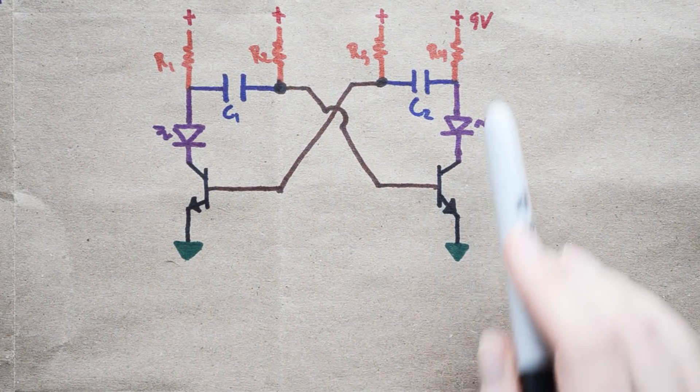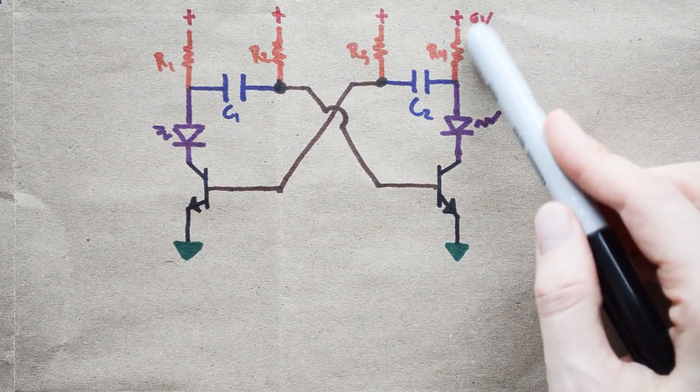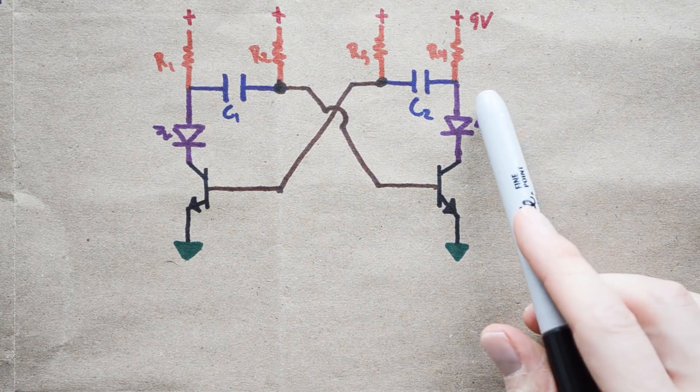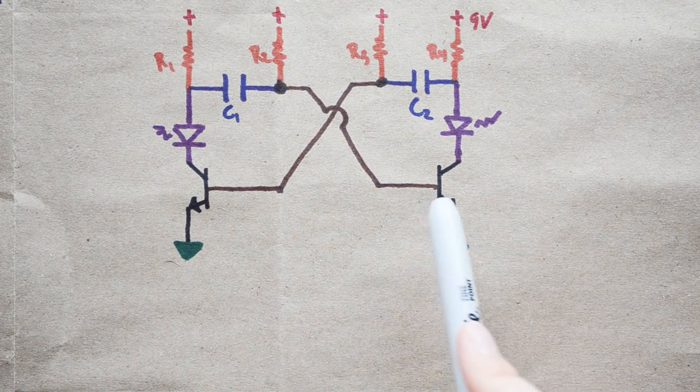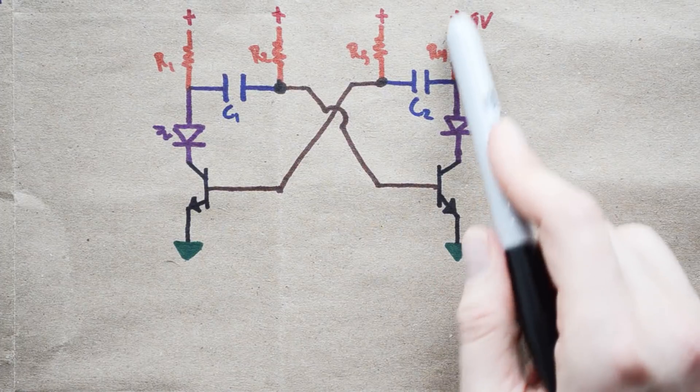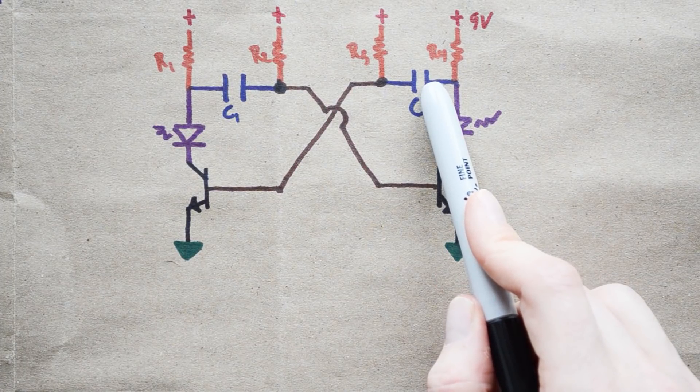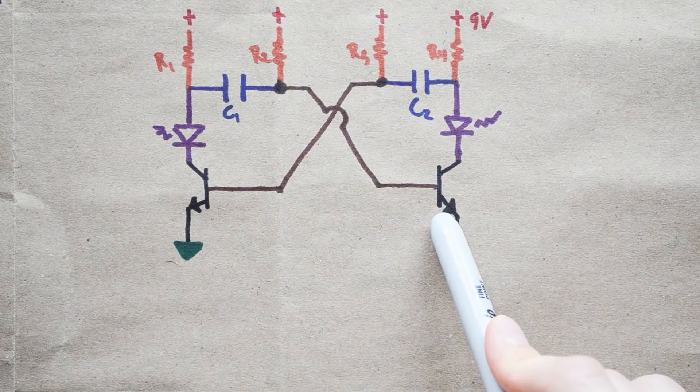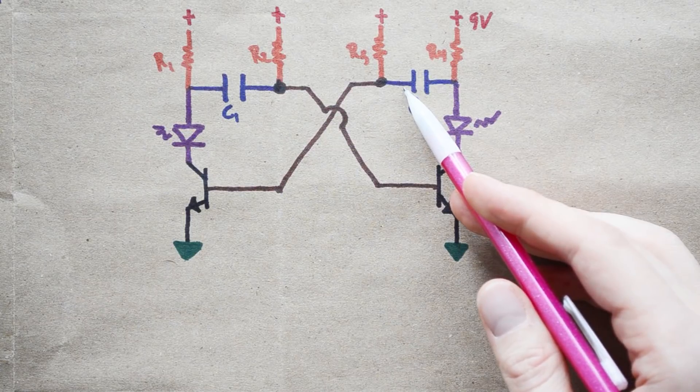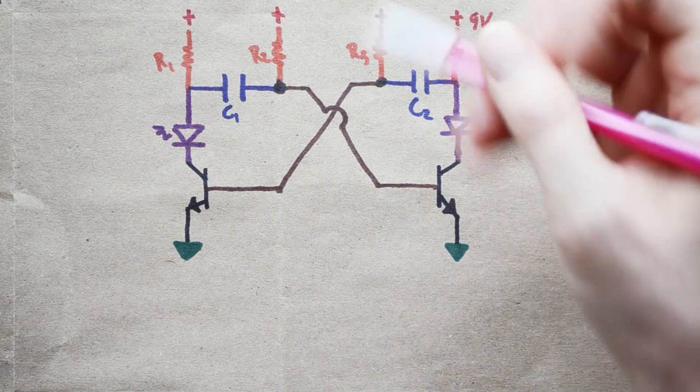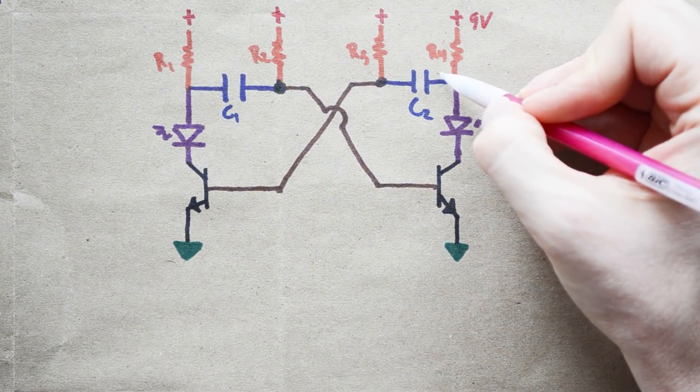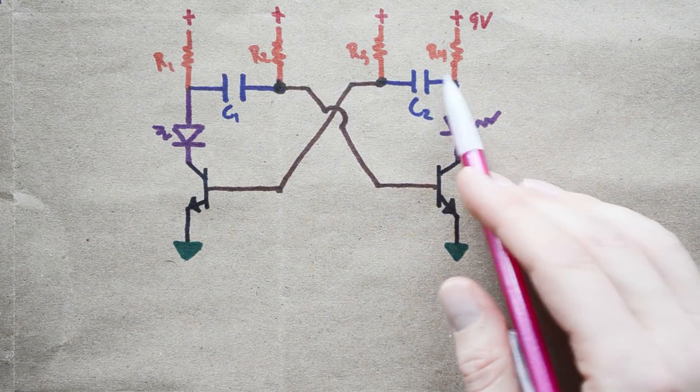When this transistor turns on, current is going to flow from this 9-volt source here through R4. It's going to turn on this LED and flow to ground. At the very same time, though, right before this transistor switches, this capacitor has been kind of charging up from this 9-volt here. And as soon as this transistor turns on, something interesting kind of happens with this capacitor. On this side of the capacitor you had, before this thing went to ground, you had a voltage of 0.95 volts. So, 0.95 volts on this side, charging up to around 9 volts on this side. So, there's about 8 volts across this capacitor.